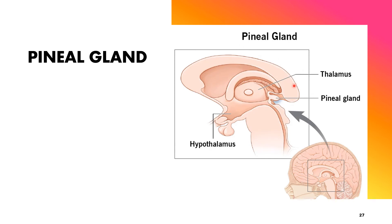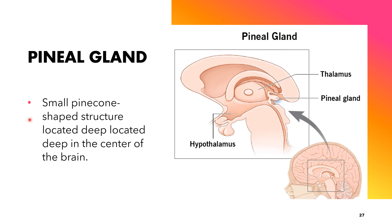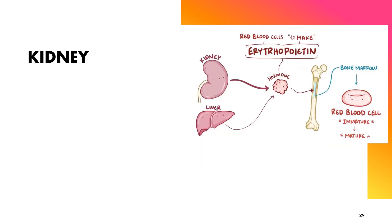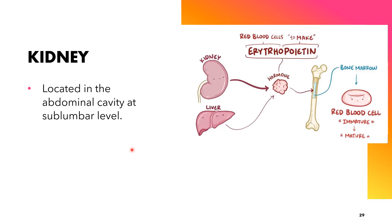The pineal gland is a small pine cone-shaped structure located deep in the center of the brain. It is responsible for the production of melatonin, which is an amine hormone. The heart is also responsible for the production of atrial natriuretic peptide, which is a polypeptide hormone. The kidney is responsible for the production of erythropoietin, also a polypeptide hormone.